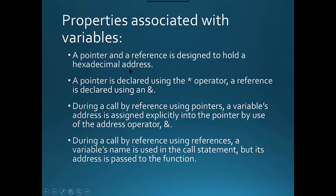Remember that pointers and references are designed to hold hexadecimal addresses. A pointer is declared using the asterisk and a reference is declared using the ampersand. With call by reference using pointers, a variable's address is assigned explicitly into the pointer using the ampersand. You have to put pointer syntax everywhere in the function definition and prototype, and then in main use the ampersand when calling. With references, all of that is done implicitly — you only need the ampersand in the function prototype and definition.